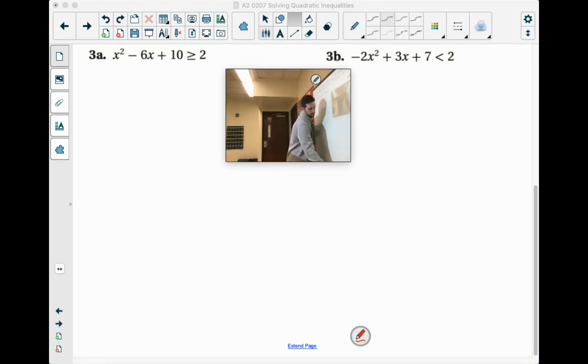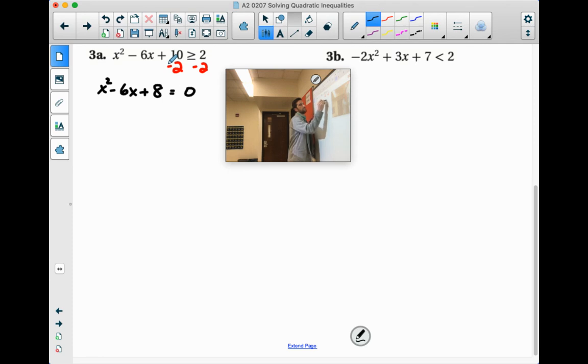We got to get it equal to zero. So we'll subtract two here from both sides. So we have x squared minus 6x plus 8 equals zero.